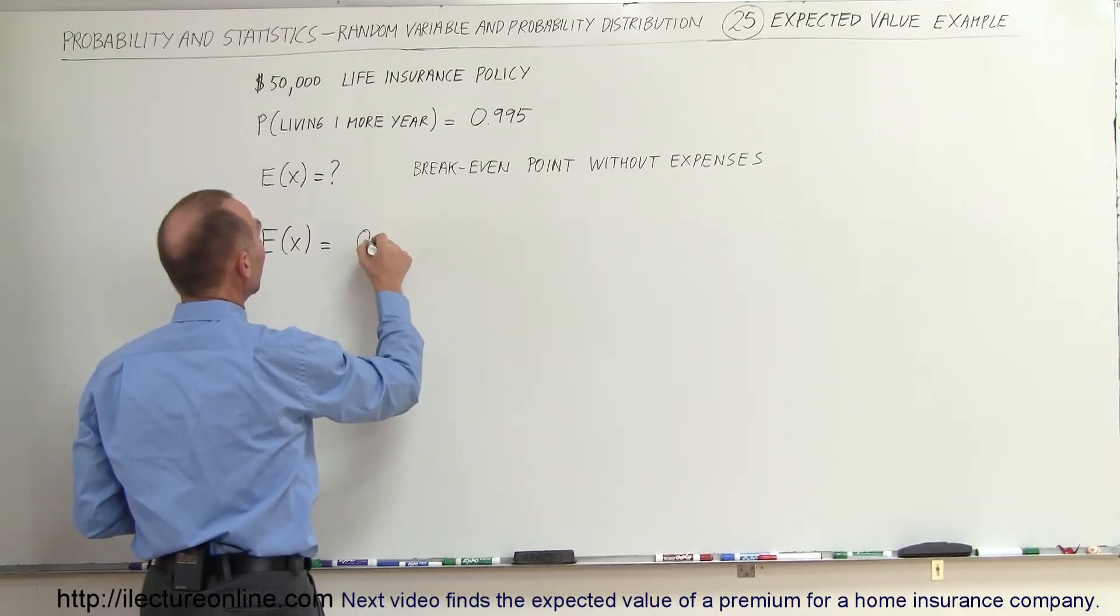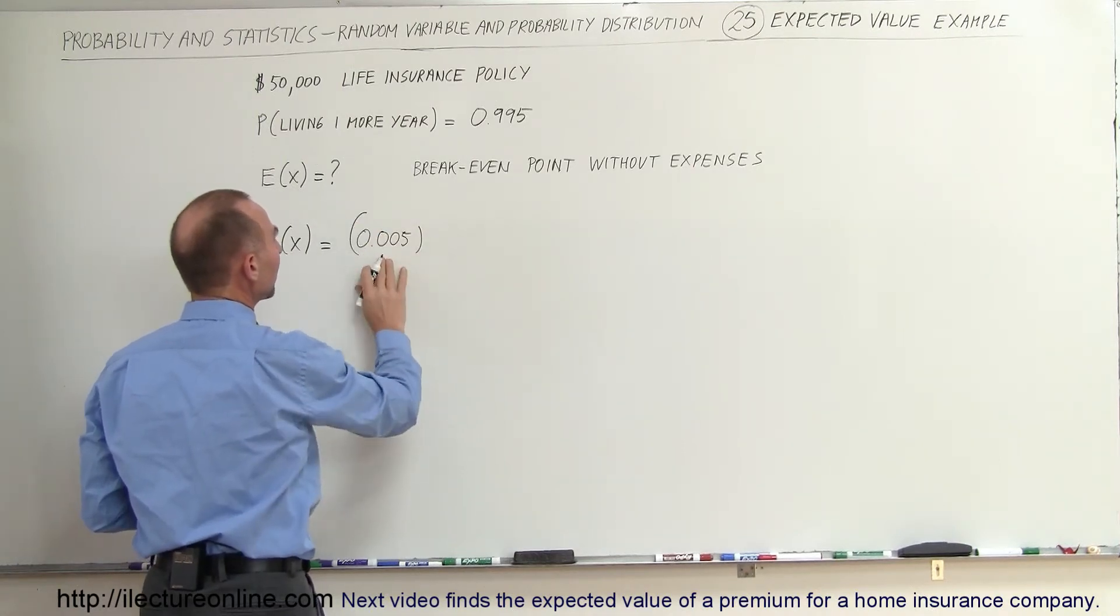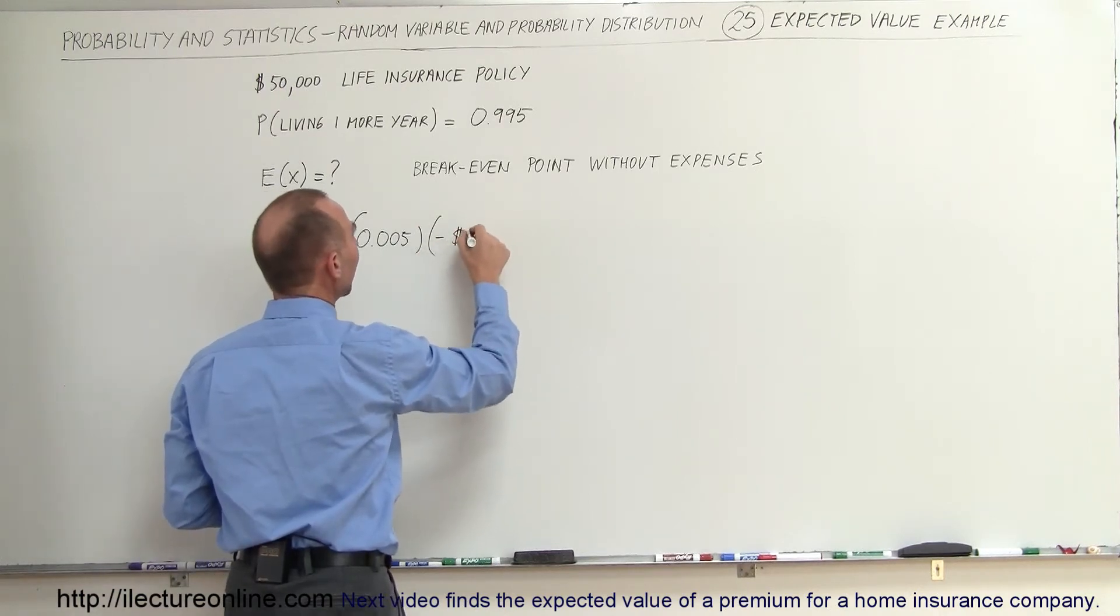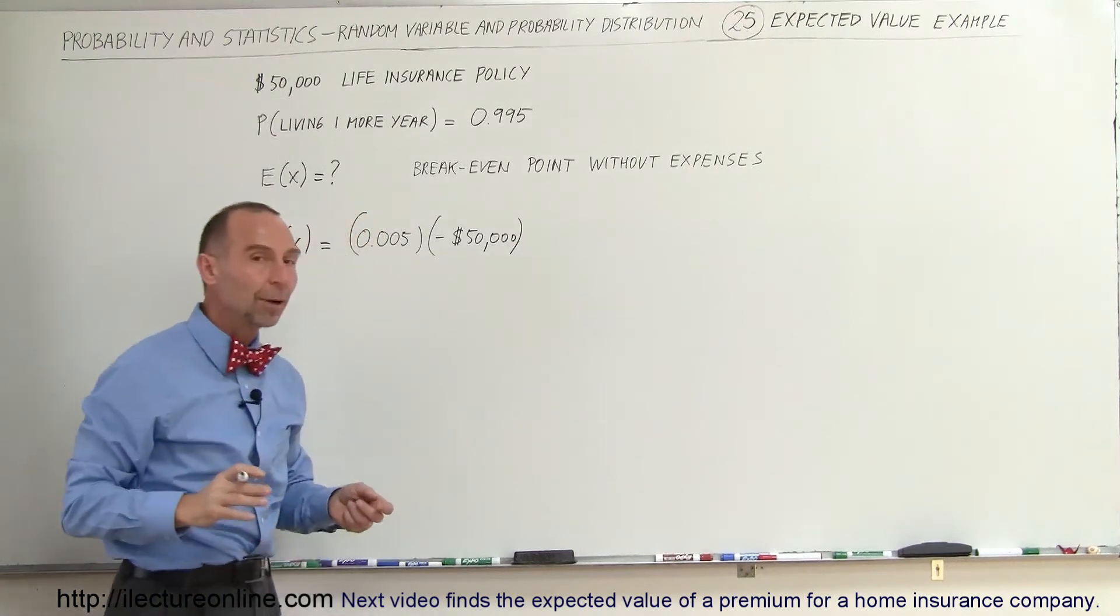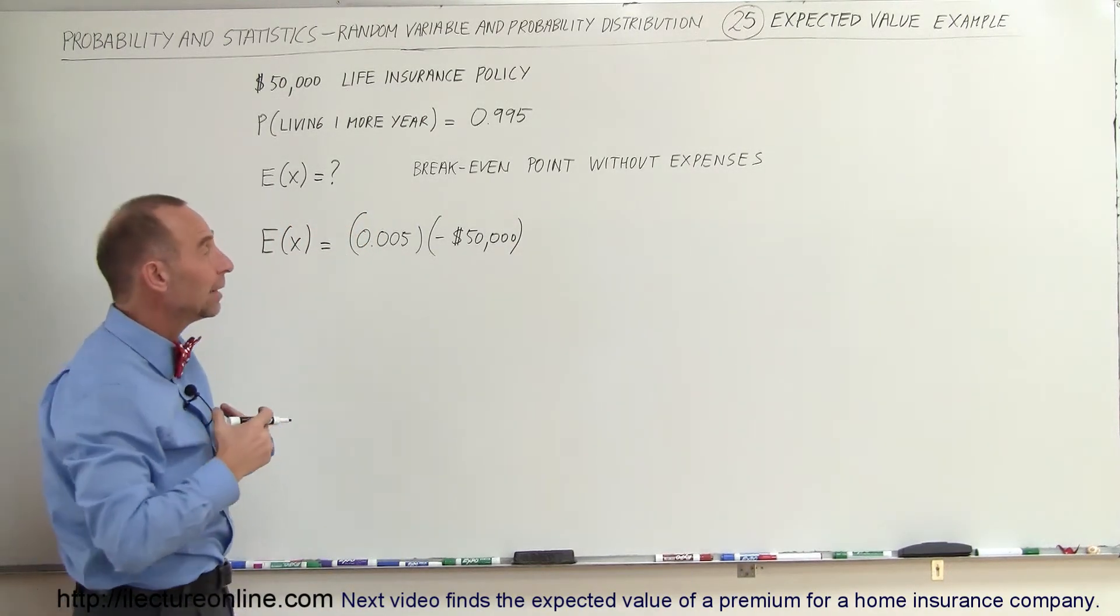The probability would be 0.005, that's the probability that you will die, times a negative $50,000 they would have to pay to you. And then the probability that you will not die, where they can take your premium in and then not have to pay.